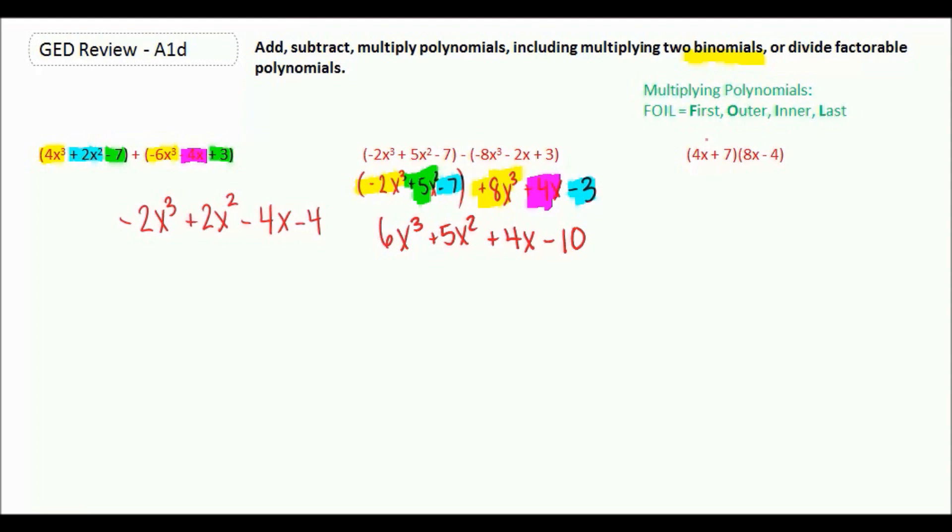The F stands for First, and we're going to multiply the first numbers in each of our parentheses. So we have 4x times 8x, and that's going to give us 32x squared. Now we do the outer, so this number and that number. They're on the outside edges. So 4x times a negative 4 is negative 16x.